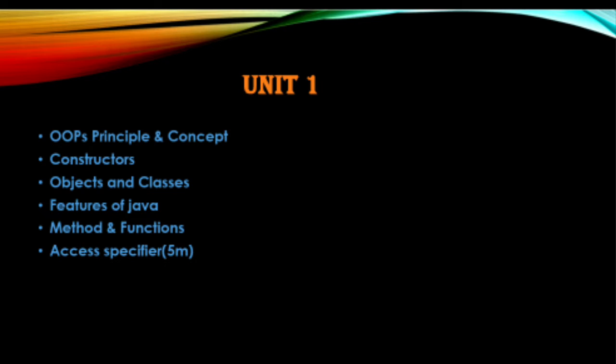In the first unit, there are two important questions: the OOP concept and Java concept. There are principles, methods, definitions, and concepts. This topic covers 2 marks questions. Let's see that — this is Java, the features of Java. These two questions are not 2 marks; they are 13 marks. This unit is possible.